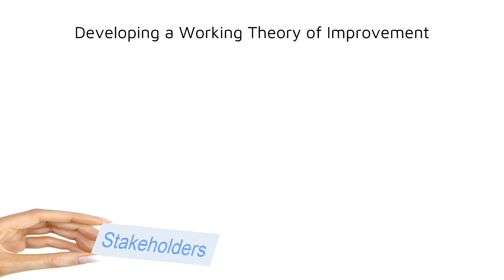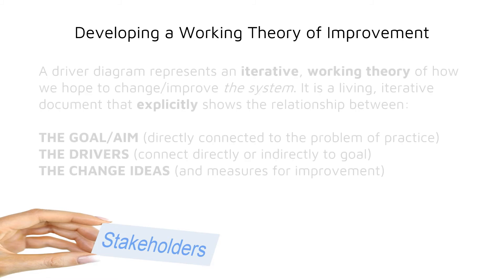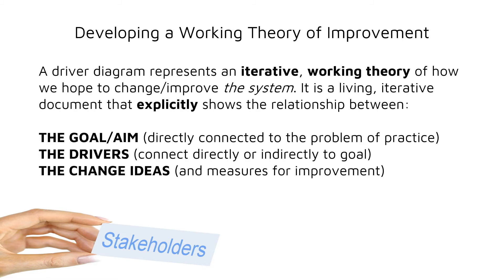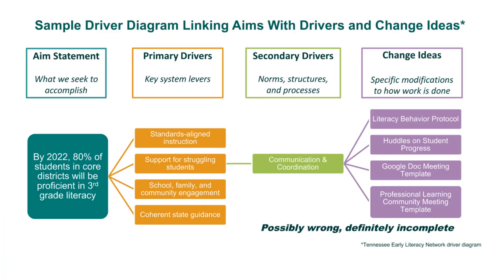In the network improvement community, members work from a shared working theory of improvement, which describes the theorized causal pathway from the promising change ideas to the goals, including the relationships between the components. The driver diagram is used to illustrate these components, which include a shared goal or aim, primary and secondary drivers believed to impact that goal, and the change ideas believed to hold potential promise for helping reach the goal. This is a sample driver diagram that includes all those described components.